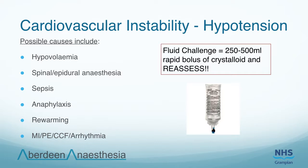Look for signs of blood loss on the sheets, on dressings or in drains, and with intra-abdominal surgery there may be abdominal pain, tenderness or distension. Assess for signs of anaemia such as pallor or conjunctival pallor and consider performing a bedside haemoglobin, for example a venous blood gas sample as well as formal laboratory bloods. Ensure the patient has adequate IV access. A fluid challenge should be given and the haemodynamic response assessed. Ongoing blood loss may require further surgical intervention and senior assistance should be sought early.